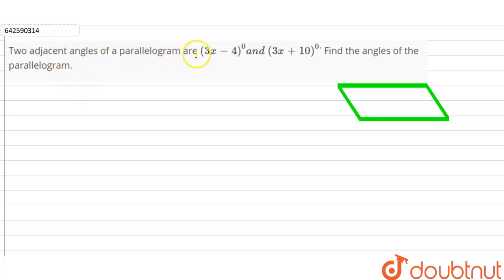Two adjacent angles of a parallelogram are (3x - 4) and (3x + 10). Find the angles of the parallelogram. So, two adjacent angles are given to us and we know that, let's say ABCD is a parallelogram.